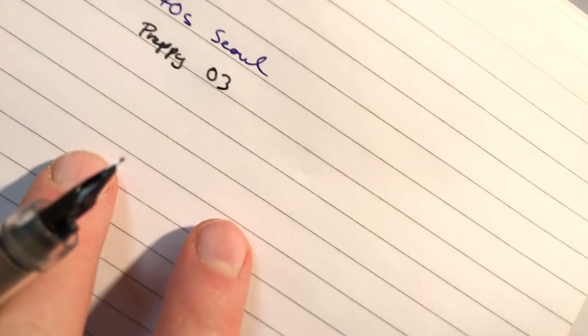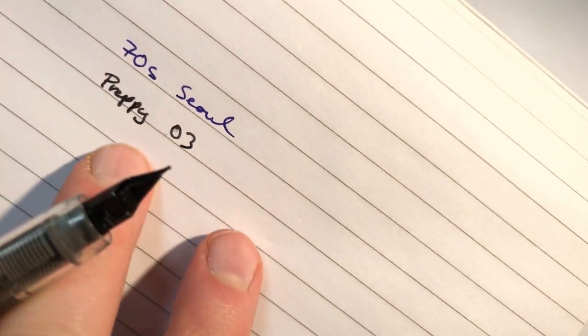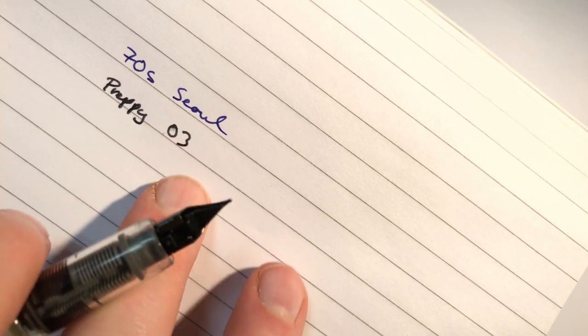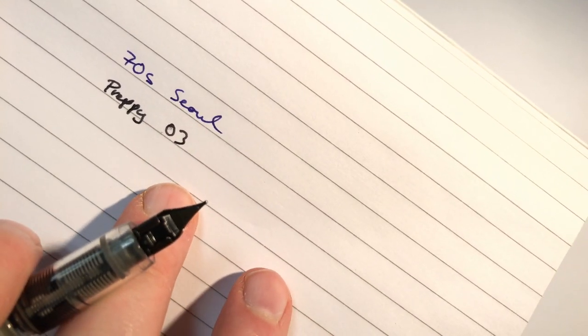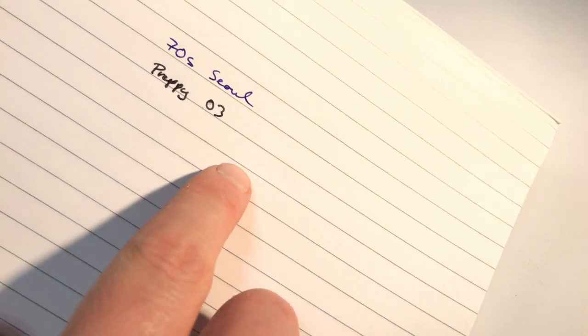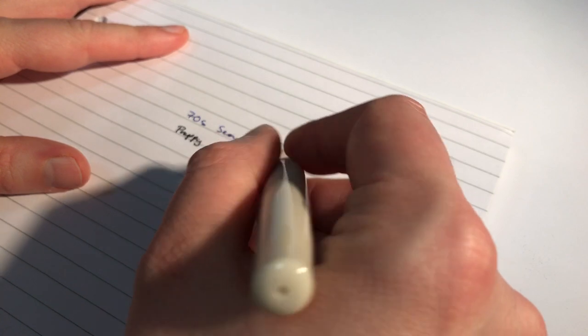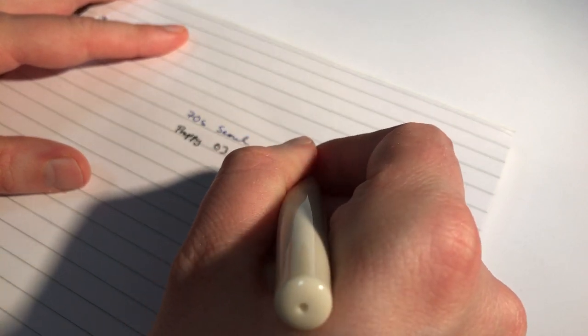Now the fold here is partly with French Lyraeco paper. It makes the lines a bit wider than some other papers would do. But you can see here the 70s Soul has a much finer line than the Preppy 0.3 which is already pretty fine to start with.